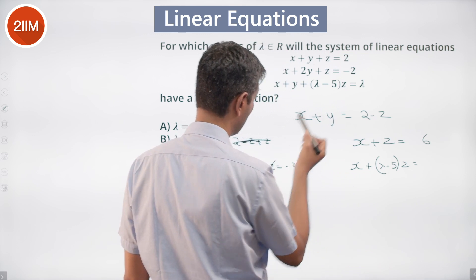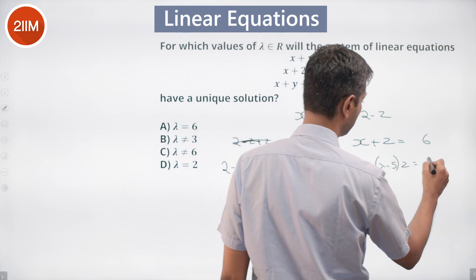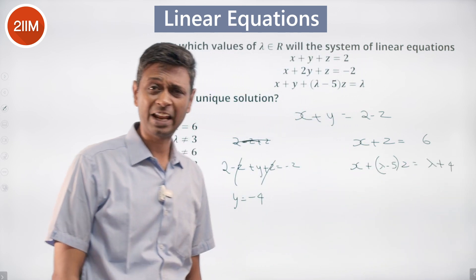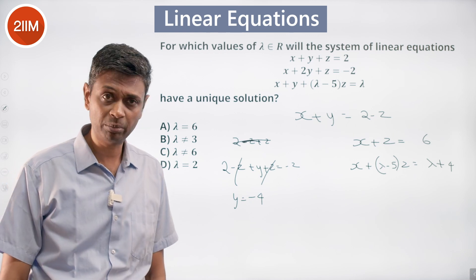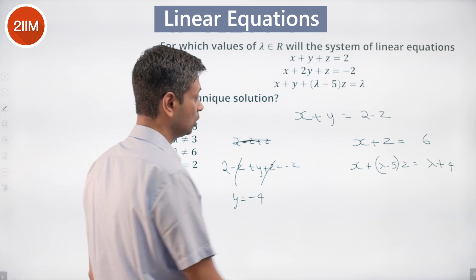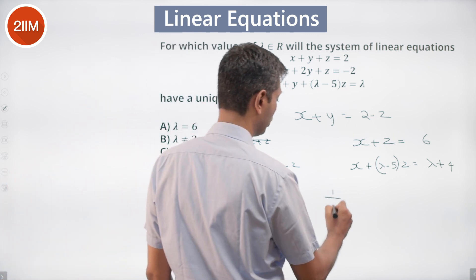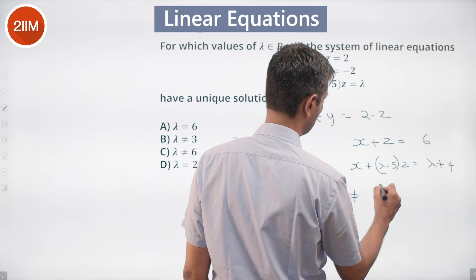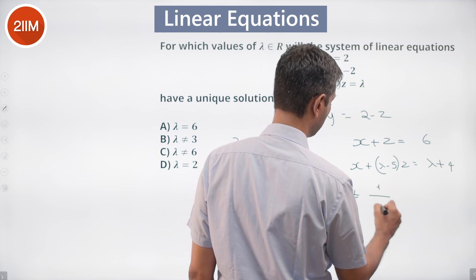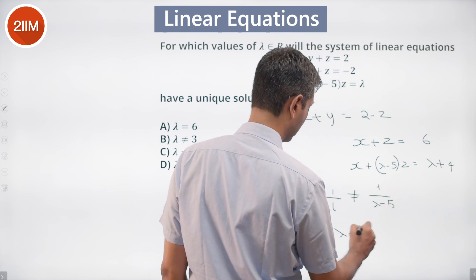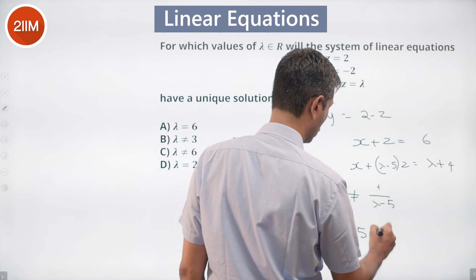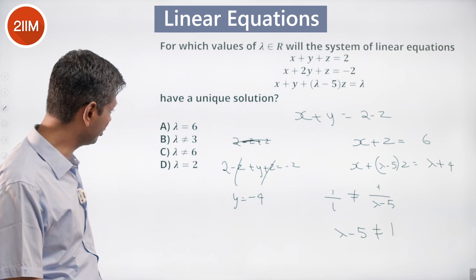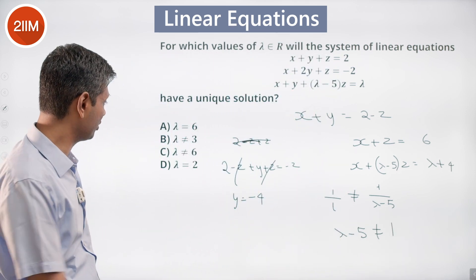The third equation becomes x plus (lambda minus 5)z equal to lambda plus 4. For a unique solution, a1 over a2 should not equal b1 over b2 — that is, 1 over 1 should not equal 1 over (lambda minus 5), so lambda minus 5 should not equal 1, meaning lambda should not equal 6.